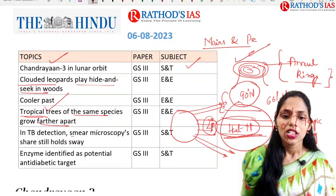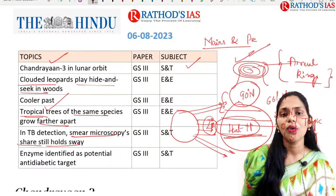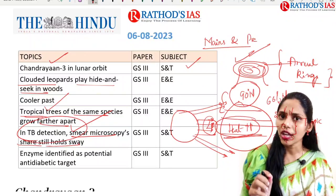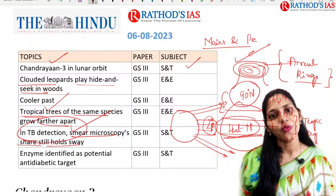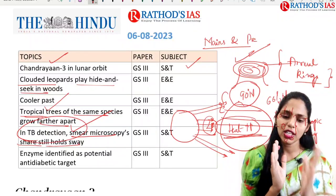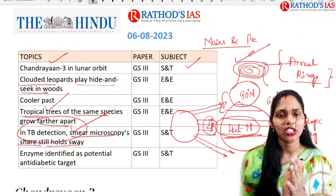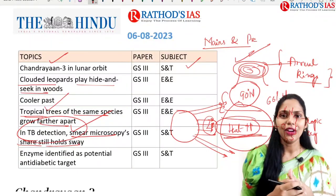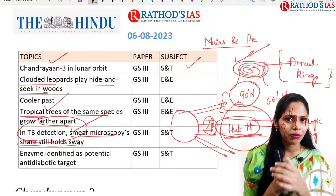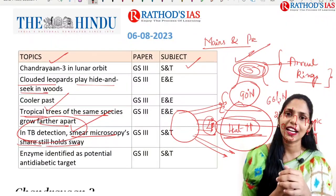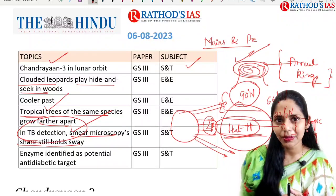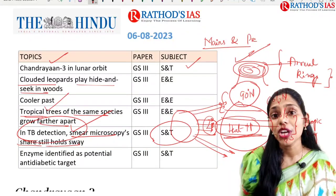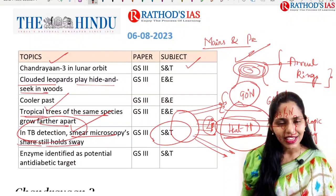The next topic is TB detection — smear microscopy still holds sway. You have to focus on tuberculosis: which organism causes it, whether it is a bacterial or viral infection, whether there is treatment, what are the first line and second line drugs, and what is multi-drug resistant TB. Please let me know your answers in the comment box. This topic is absolutely important from science and technology, which comes under GS paper 3.